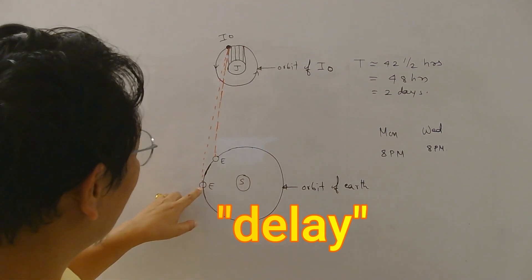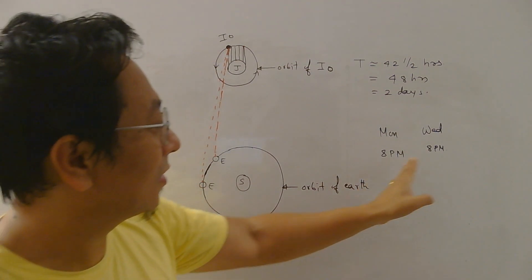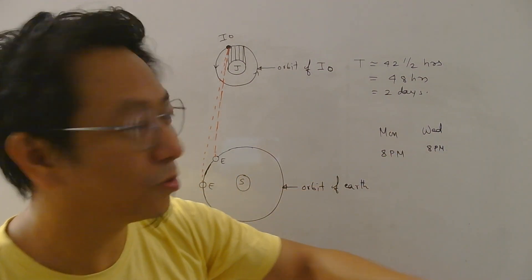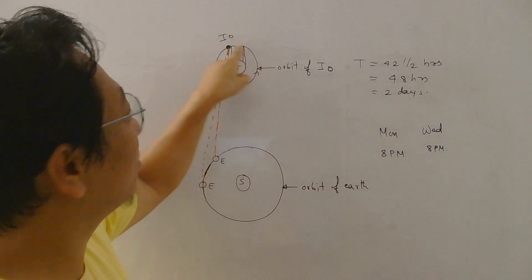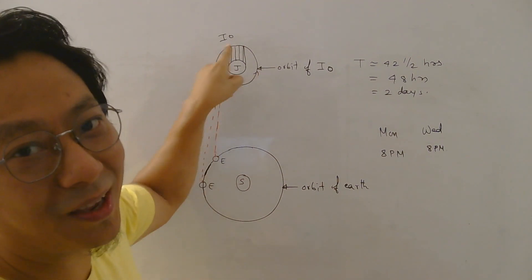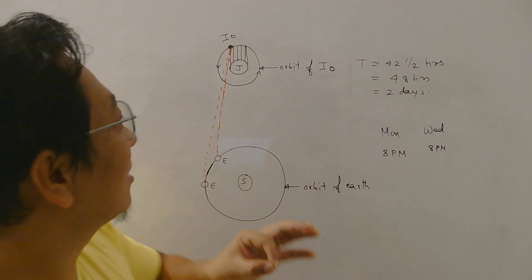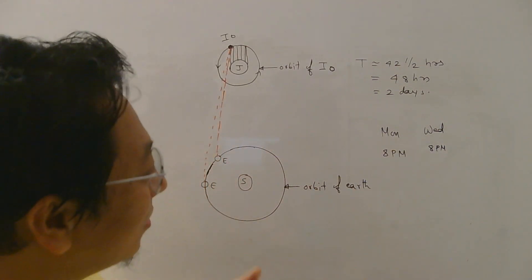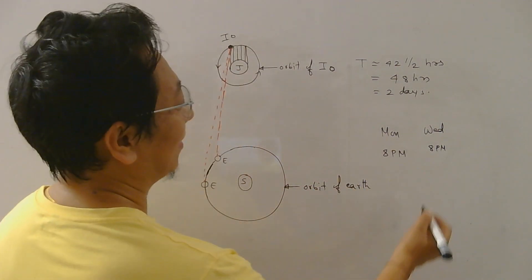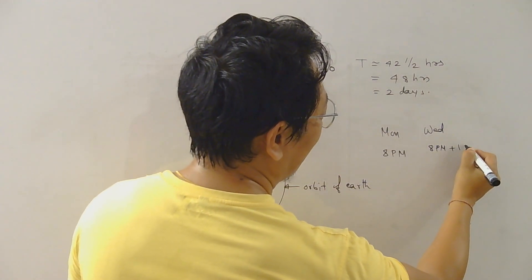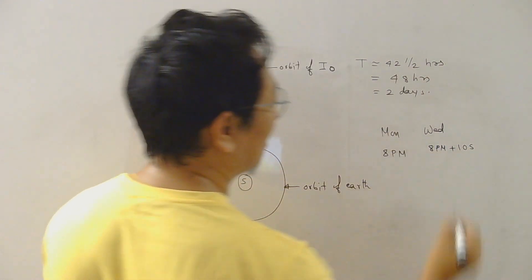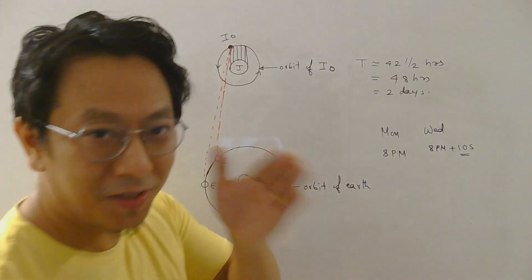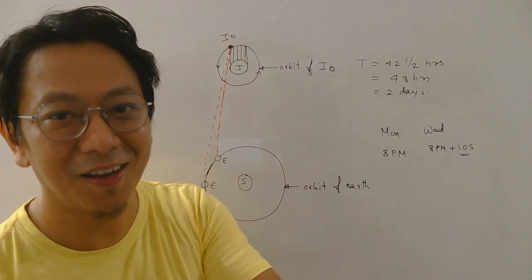But he found that there was a slight delay. He did not see the second moon rise at the expected time which was 8 PM after 2 days, provided I assume it took 2 days for Io to reach back here. So the second moon rise was expected to be at Wednesday 8 PM, but it was found that it got delayed and let's say it was found to be at 8 PM past 10 seconds. So there was a delay of 10 seconds. So there was a delay of 10 seconds between the first moon rise and the second moon rise. Okay.